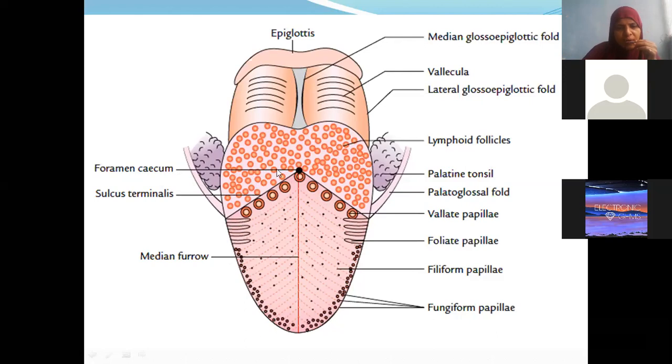Thyroglossal duct. So in front of the sulcus terminalis we have round papillae. What are these? Circumvallate papillae. So over the dorsum, if you observe, we have one median furrow. Then on the margins of the tongue we have fungiform papillae. Throughout the surface of the tongue we have filiform papillae. And towards the margins of the posterolateral corners we have foliate papillae.